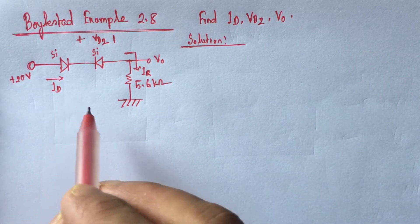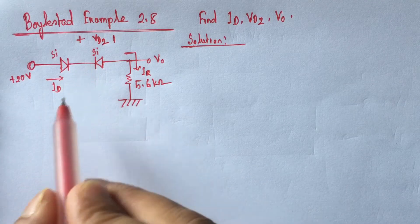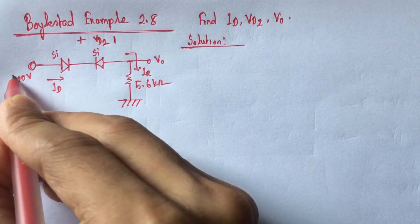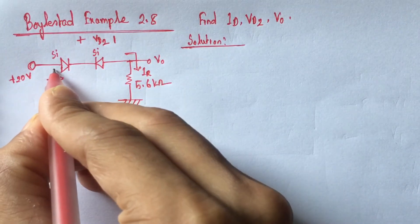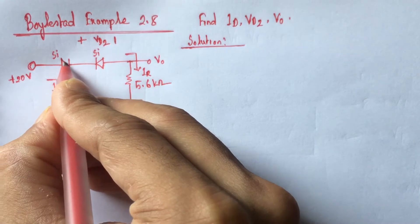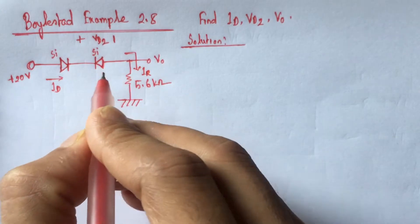From the circuit we see that two diodes exist and both are silicon diodes. Now the biasing voltage is 20 volt so this diode is forward biased. First diode is forward biased but this second diode is reverse biased.